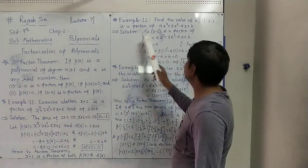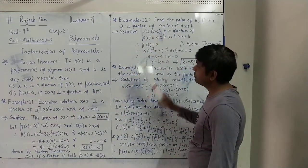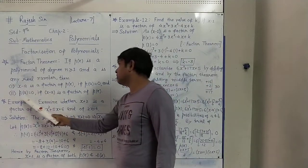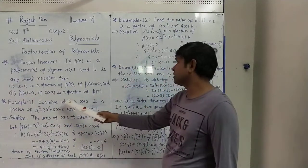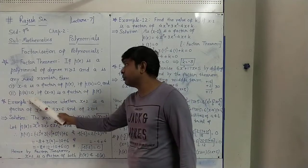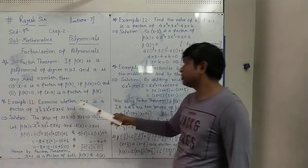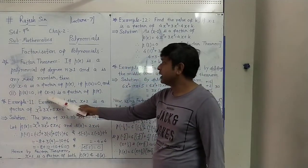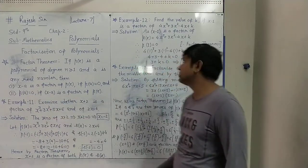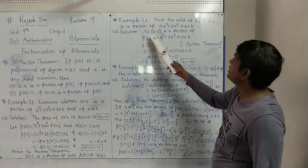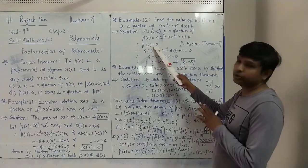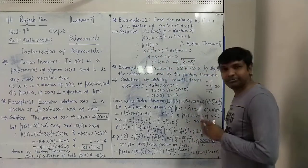If x minus 1 is a factor given, it will only be so when P(a) equals 0. Similarly, if x minus 1 is a factor, that means a equals 1, so P(1) equals 0. This is the Factor Theorem: if x minus 1 is a factor, then P(1) equals 0.